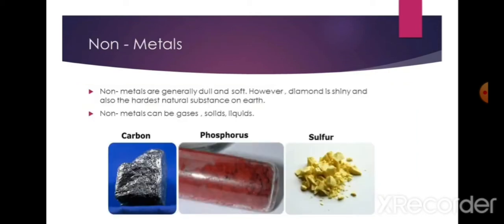Non-metals are generally dull and soft. However, diamond is shiny and also the hardest natural substance on earth. Non-metals can be gases, solids, and liquids. Non-metals such as oxygen, hydrogen, and chlorine are gases at room temperature. Carbon, iodine, sulfur, and phosphorus are solids at room temperature. Bromine is the only non-metal that is liquid at room temperature.